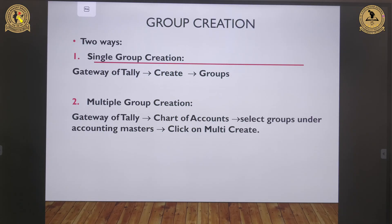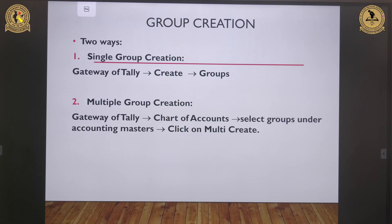Now let's understand how to create a group in Tally Prime. There are two ways: single group creation and multiple group creation. For single group creation, follow the path Gateway of Tally > Create > Group. If you want to create multiple groups at one time, follow Gateway of Tally > Charts of Accounts > select Groups under Accounting Master > and click on Multi Create. In this way, we can create groups in Tally Prime.